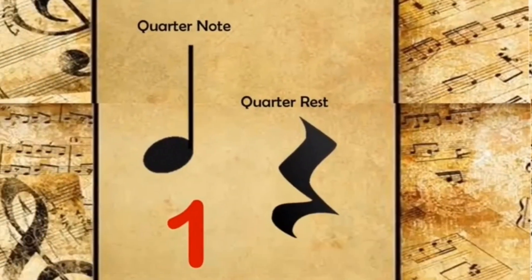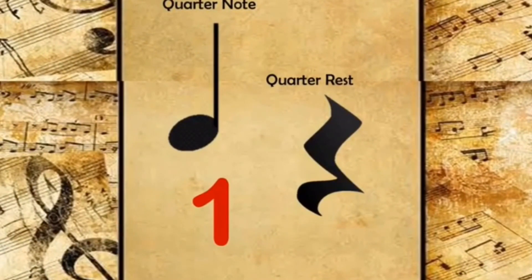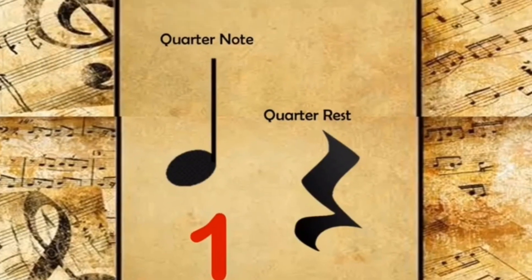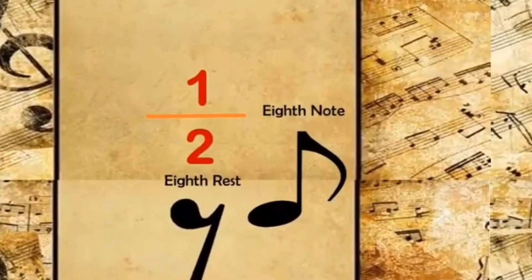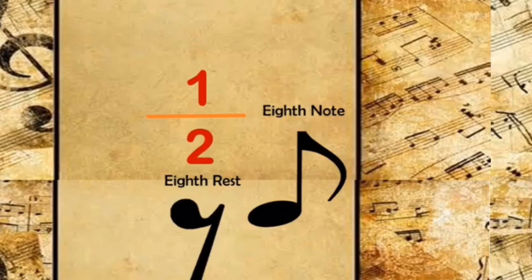These are the musical symbols of a quarter note and quarter rest. Quarter note gets 1 beat of sound and the quarter rest gets 1 beat of silence. These are the musical symbols of an eighth note and eighth rest. Eighth note gets half of a beat of sound and eighth rest gets half of a beat of silence.